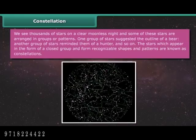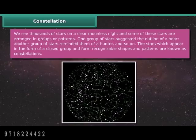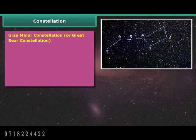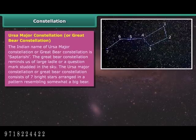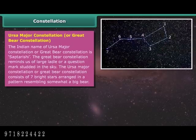We see thousands of stars on a clear moonless night, and some of these stars are arranged in groups or patterns. One group suggested the outline of a bear, another reminded people of a hunter, and so on. Stars which appear in the form of a closed group and form recognizable shapes and patterns are known as constellations. The Ursa Major constellation, or Great Bear constellation, is known in India as Saptarishi.